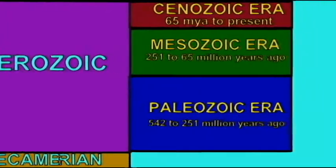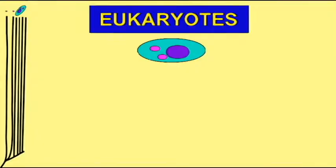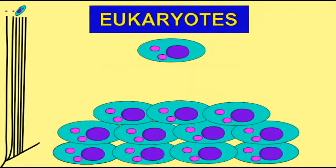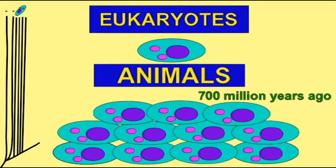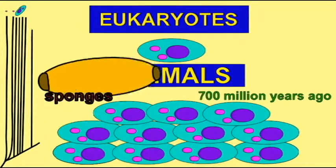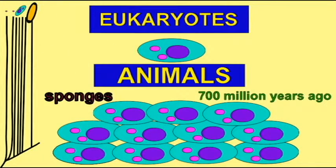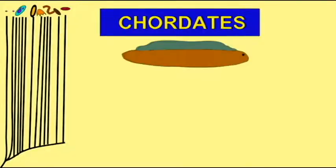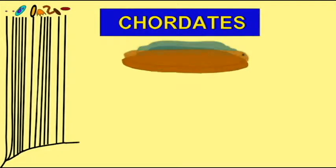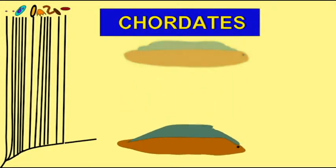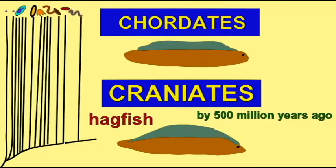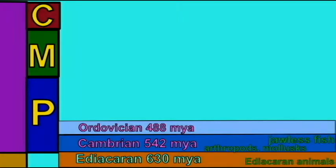Only after the eukaryotic cells appear are the first animals known. Long after the first animals, there are the first fossils of jawless fish. And only after tens of millions of years of jawless fish are there the first fossils of jawed fish.